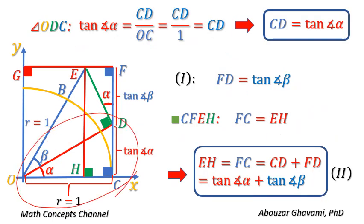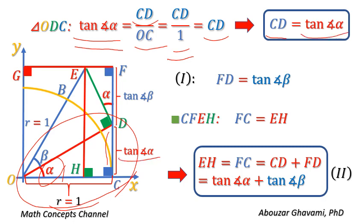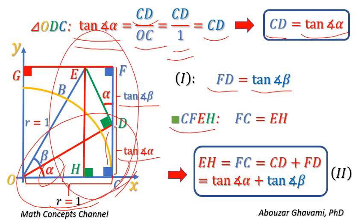In right triangle ODC, tangent of angle alpha equals the length of front side CD divided by the length of adjacent side OC. Thus, CD equals tangent of angle alpha. We also obtained FD equals tangent of angle beta. In rectangle CFEH, sides FC and EH are equal. Thus, EH equals FC equals CD plus FD equals tangent of angle alpha plus tangent of angle beta.